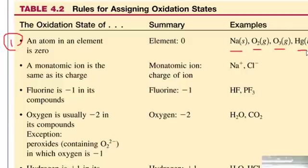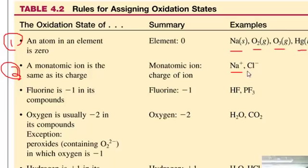Rule number two: in a monatomic ion — monatomic just means it's one atom — the oxidation state is the same as the charge. For example, sodium ion (Na⁺) has an oxidation state of plus one. Chloride (Cl⁻) has an oxidation state of minus one. That's that simple.